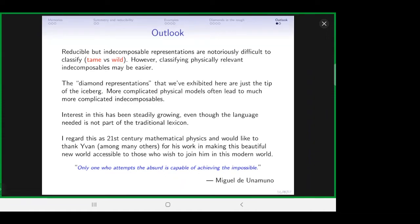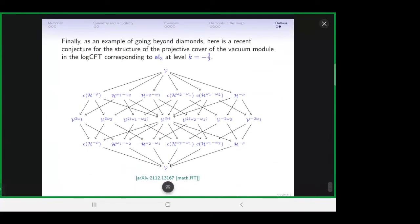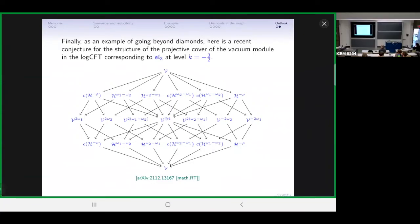My conclusions will be very short. Irreducible representations are fairly well understood. Reducible but indecomposable ones can be extremely difficult to understand. Almost all algebras are wild, meaning you cannot classify the indecomposable representations. But that doesn't mean you can't classify the ones important to you. In my case, it's often enough to classify the projectives, injectives, and understand the standard modules. The diamond representations are certainly not exhaustive. Sometimes you're forced to go to more complicated physical models with much more complicated indecomposables. Thank you very much for paying attention and listening. I'll conclude with a picture to show where things are more complicated—a conjectured structure of the projective cover of a vacuum module in a logarithmic CFT corresponding to a rank 2 Lie algebra.